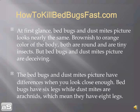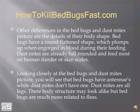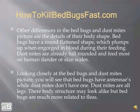Bed bugs have six legs while dust mites have eight legs. Other differences include their body shape: bed bugs have a round, flattened shape that plumps up when engorged with blood during feeding. Dust mites are already fully rounded and feed mostly on human dander or skin scales. Bed bugs also have antennae, while dust mites don't — dust mites are essentially all legs. Though their body structures may look alike, bed bugs are much more closely related to the flea species.